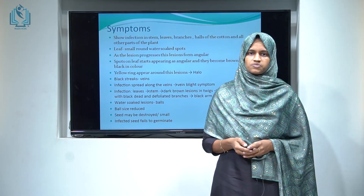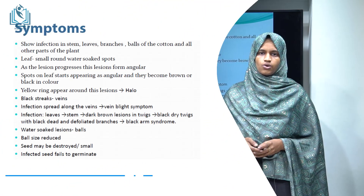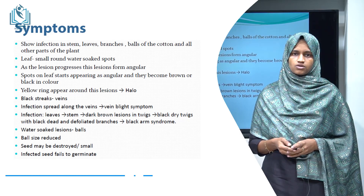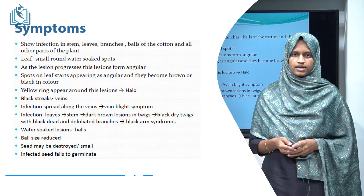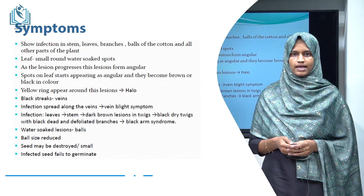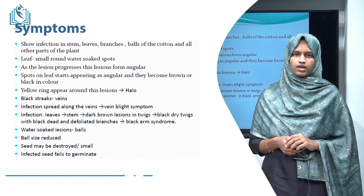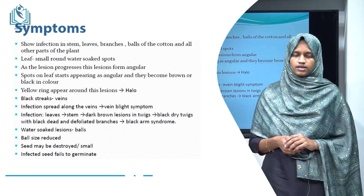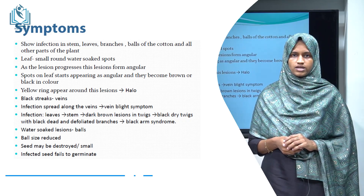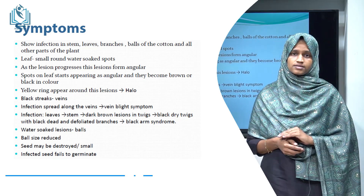Next are the symptoms of angular leaf spot of cotton. Once the organism has entered inside the host tissue, it affects all parts of the plant — roots, stem, leaves, bolls, branches and all other parts. Initially, the leaf will show small round water-soaked lesions on the upper and underside of the leaf. These lesions are initially light green in color and mature to form a dark brown color.